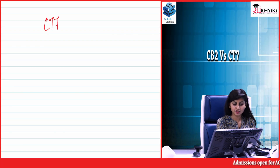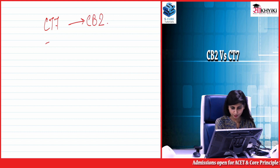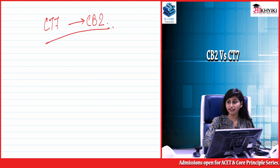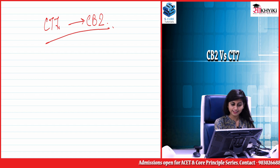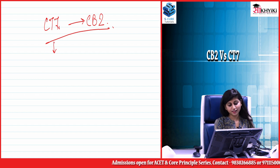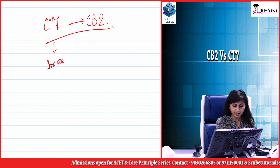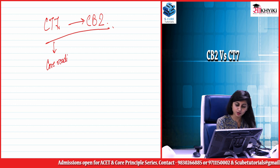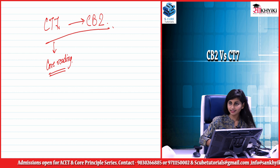From CT7 to CB2, the transition has not been easy and there have been a lot of changes that have been made. Firstly, everything in CT7 was provided in the core reading material and there was no need to switch between the pages to understand the content.